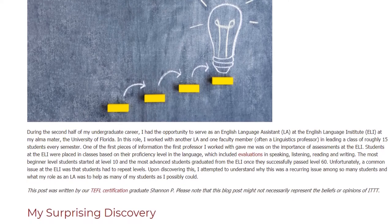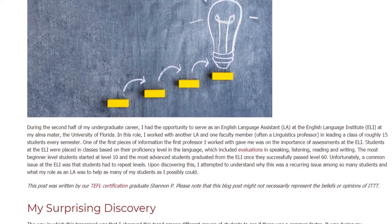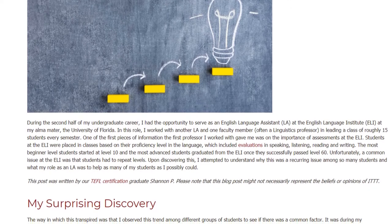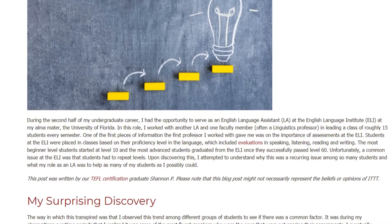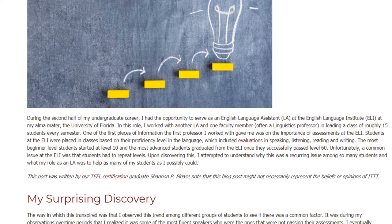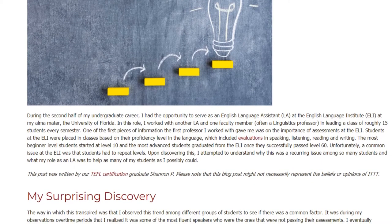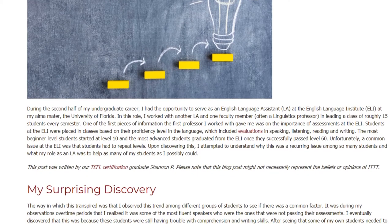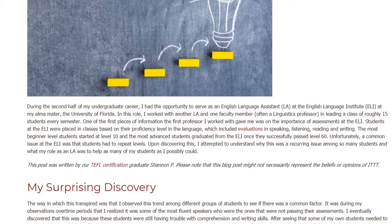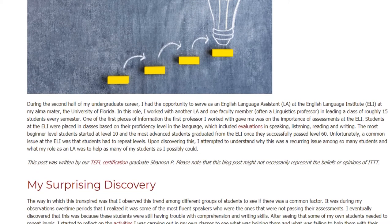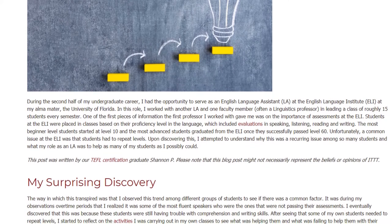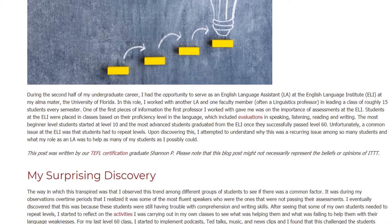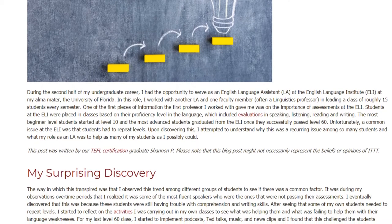Students at the ELI were placed in classes based on their proficiency level in the language, which included evaluations in speaking, listening, reading, and writing. The most beginner level students started at level 10, and the most advanced students graduated from the ELI once they successfully passed level 60.